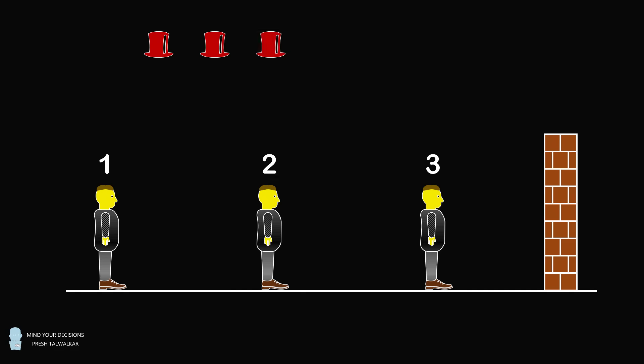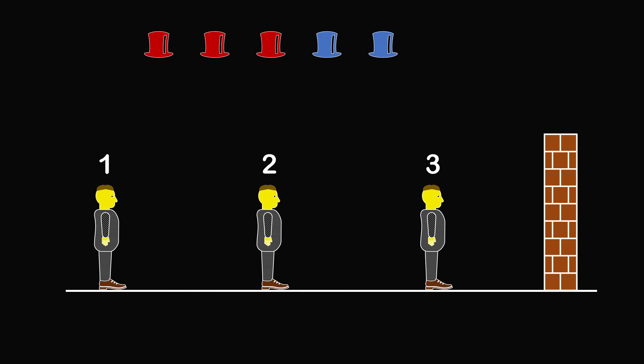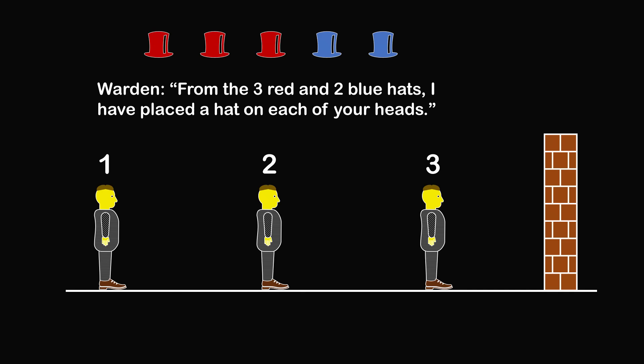The warden has three red hats and two blue hats. A hat will be placed on each prisoner's head, randomly chosen. The warden tells all of them, from the three red and blue hats, I have placed a hat on each of your heads.